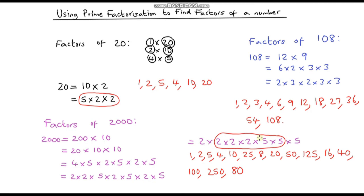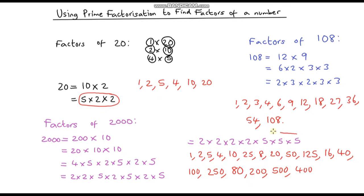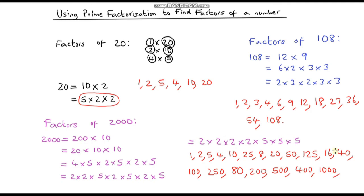Three 2s and two 5s: 2 times 2 times 2 times 5 times 5 is 200. Two 2s and three 5s: 2 times 2 times 5 times 5 times 5 is 500. Six-number combinations: four 2s and two 5s — 2 times 2 times 2 times 2 times 5 times 5 — is 400. Four 2s missing one 2 gives three 2s and three 5s, which is 1000. And multiplying all seven prime factors together gives us 2000.